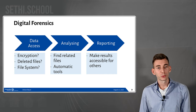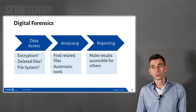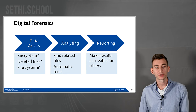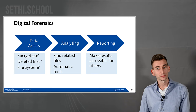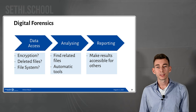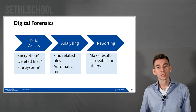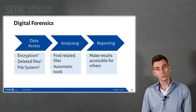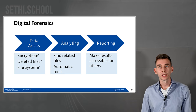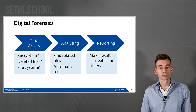The usual process of digital forensics consists of three steps. The first is getting access to the actual data — you take the hard disk out of the device and check for encryption, the file system being used, and whether there are any deleted files you can still access. The second step is to analyze the data; for example, if you are investigating a tax fraud, you look for Excel spreadsheets or PDF documents, and there are automated tools to help with this. The last step is to report the results of your investigation to whoever needs to know it, like a judge or a company that employed you.